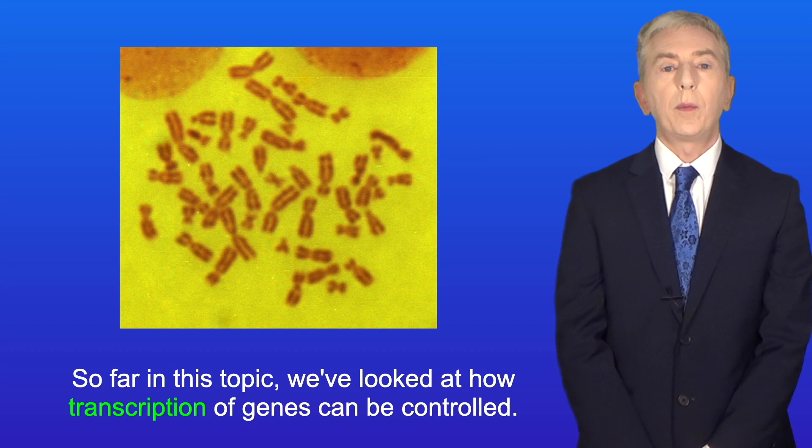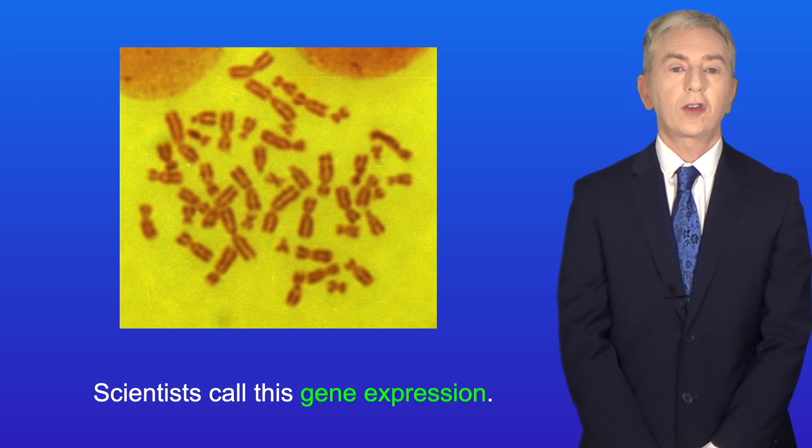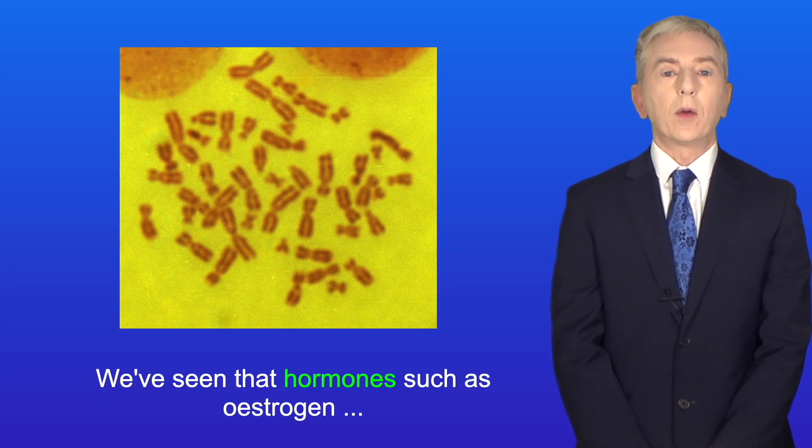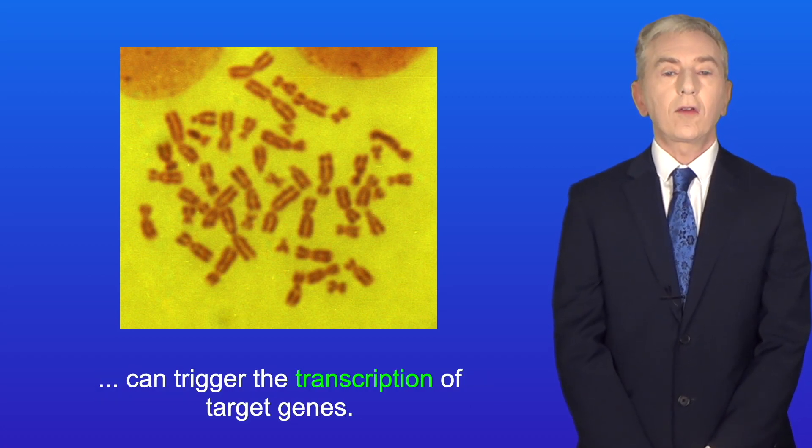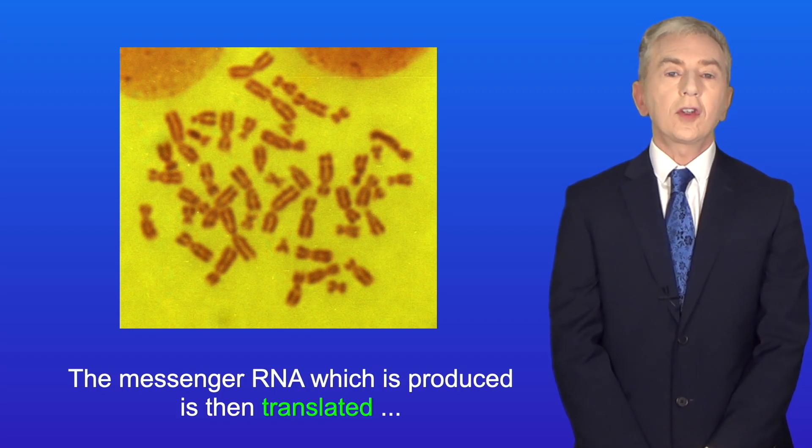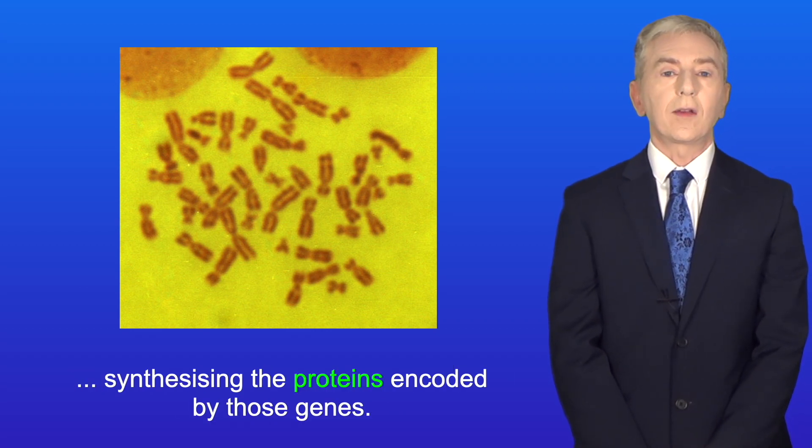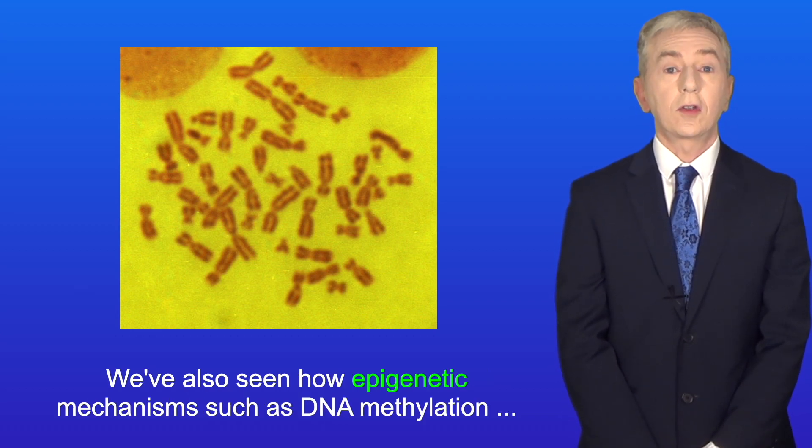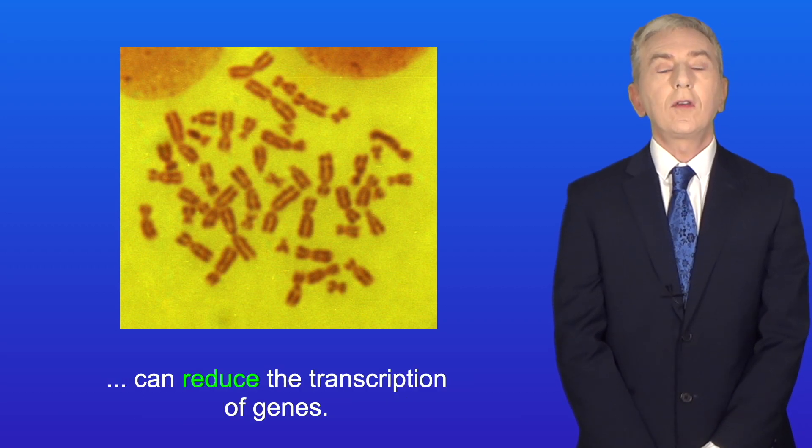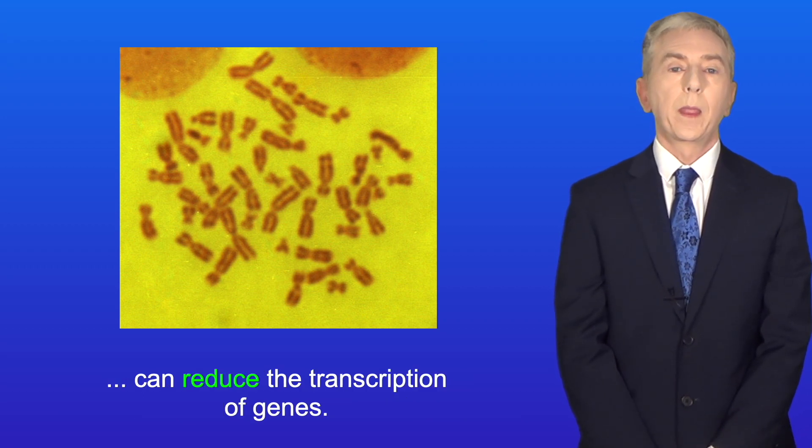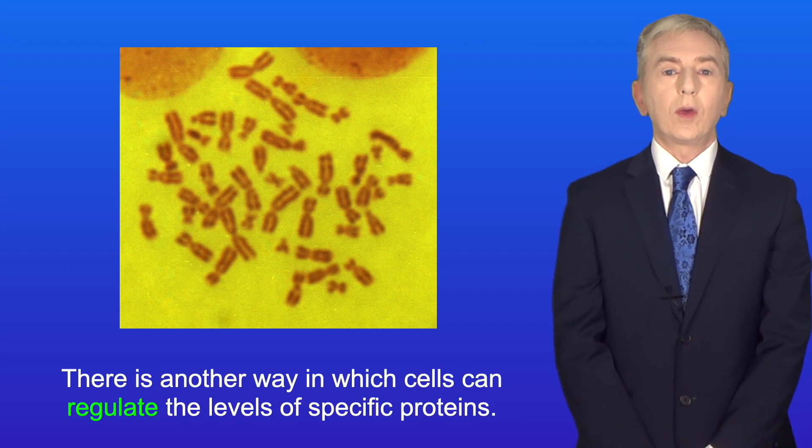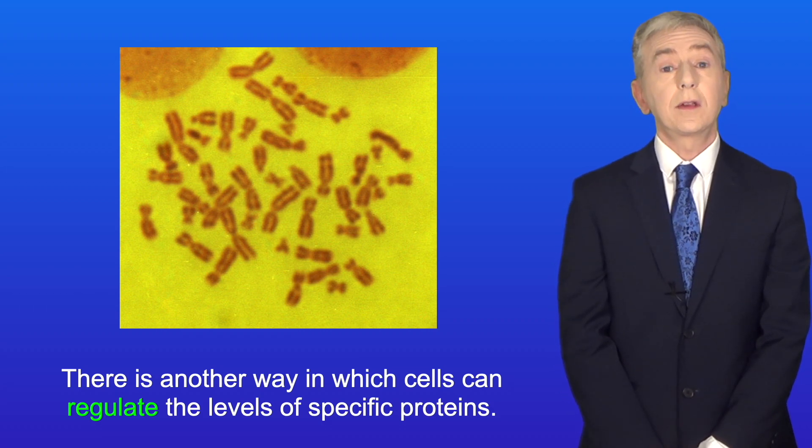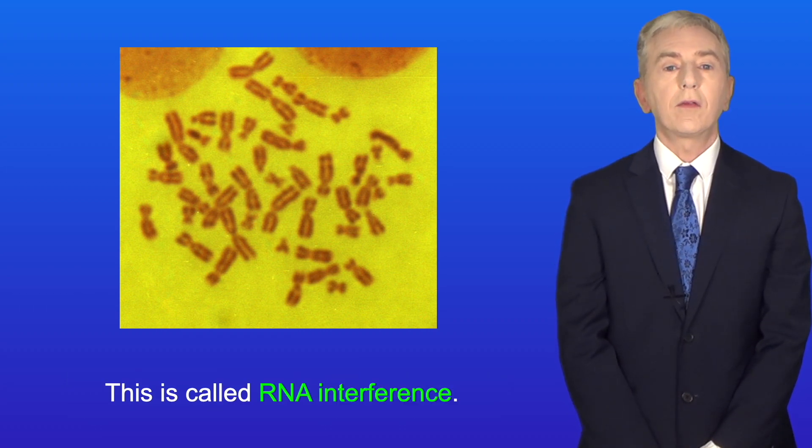Now so far on this topic, we've looked at how transcription of genes can be controlled. Scientists call this gene expression. We've seen that hormones such as estrogen can trigger the transcription of target genes. The messenger RNA which is produced is then translated, synthesizing the proteins encoded by those genes. We've also seen how epigenetic mechanisms, such as DNA methylation, can reduce the transcription of genes. Now, there is another way in which cells can regulate the levels of specific proteins. This is called RNA interference.